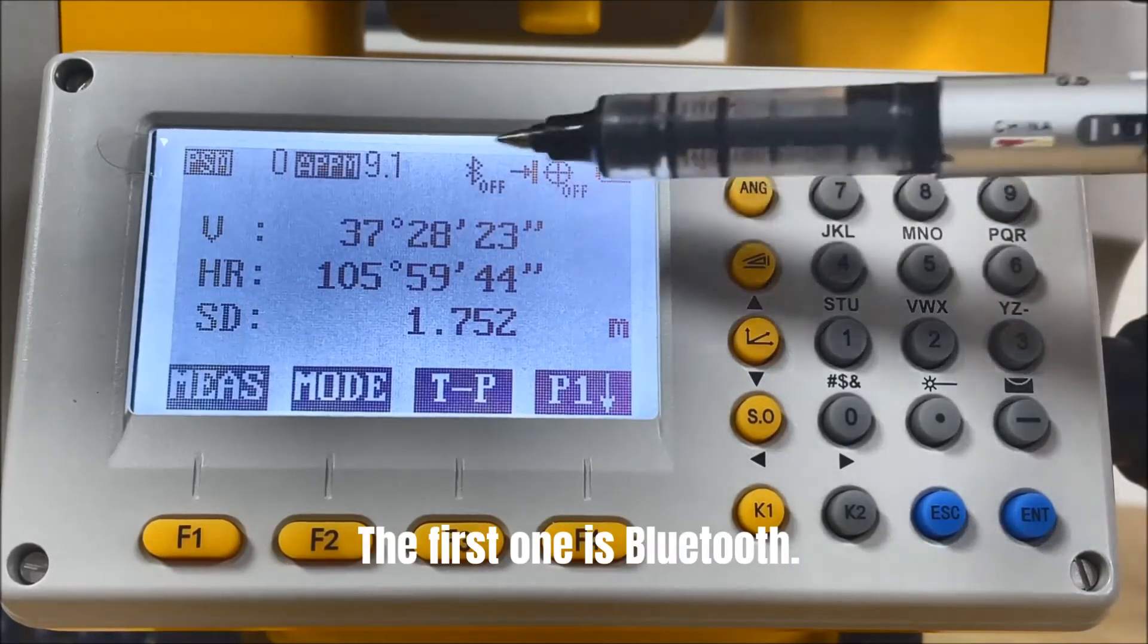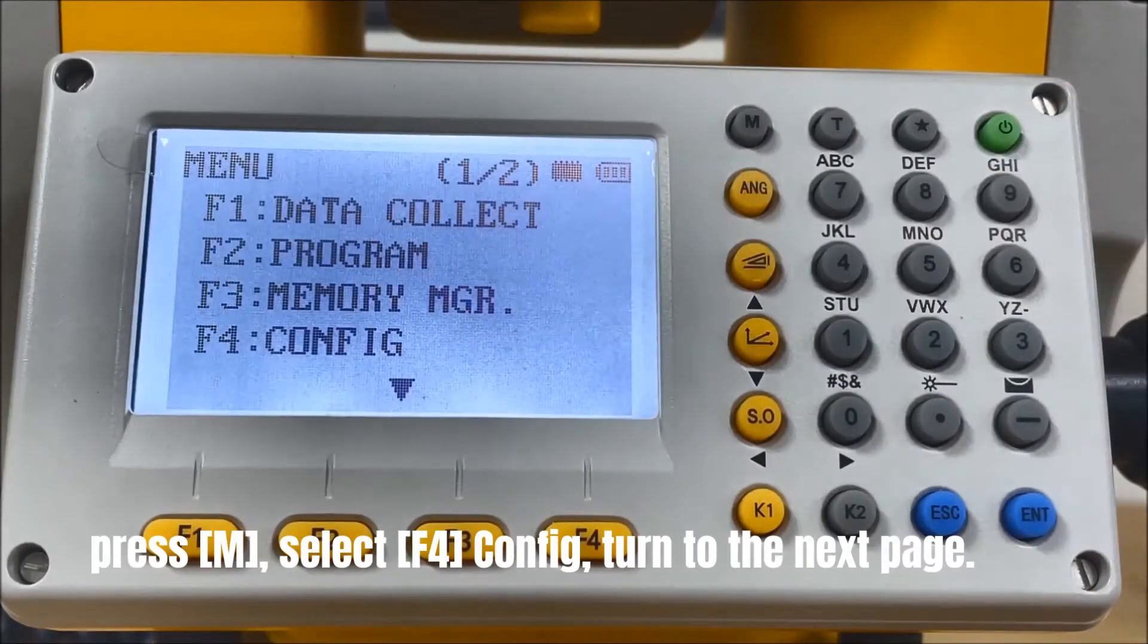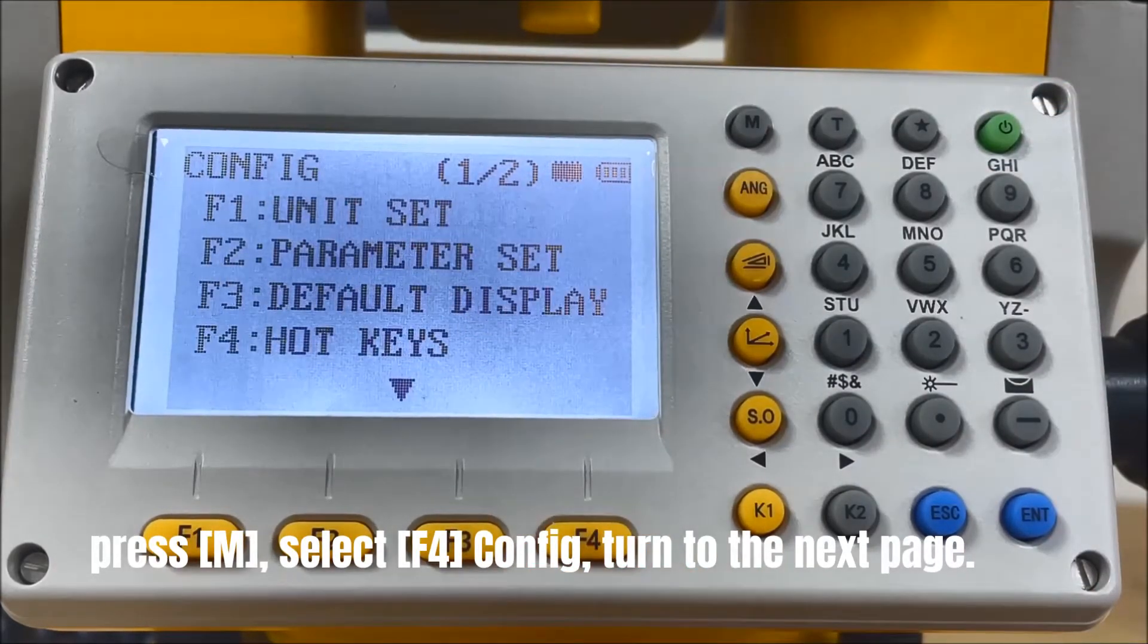The first one is Bluetooth. If you want to open the Bluetooth, press Menu, select F4 Config, and turn to the next page.